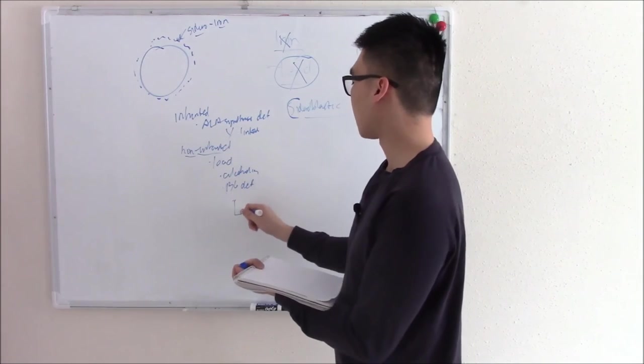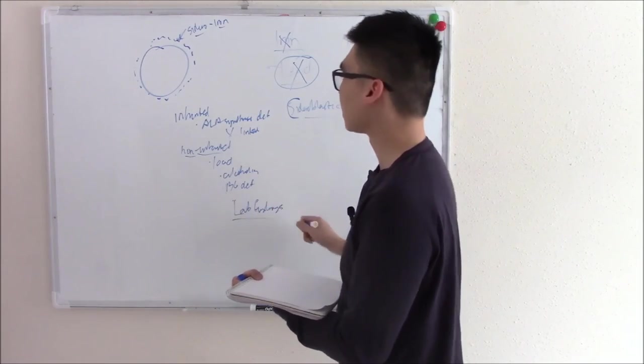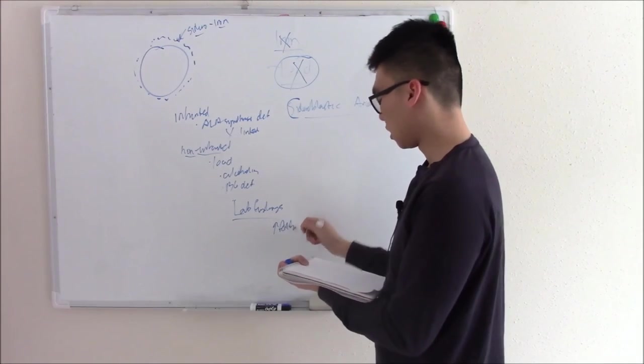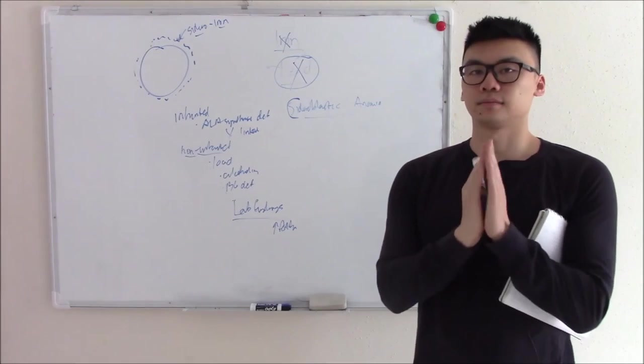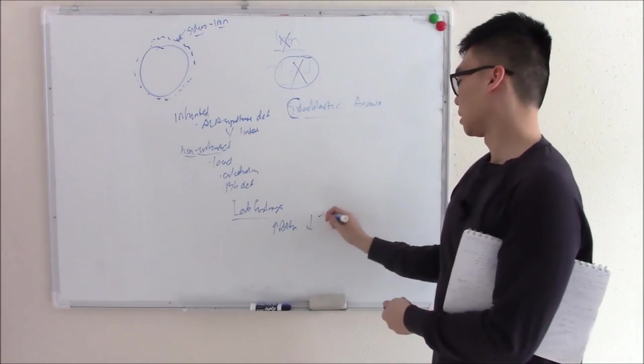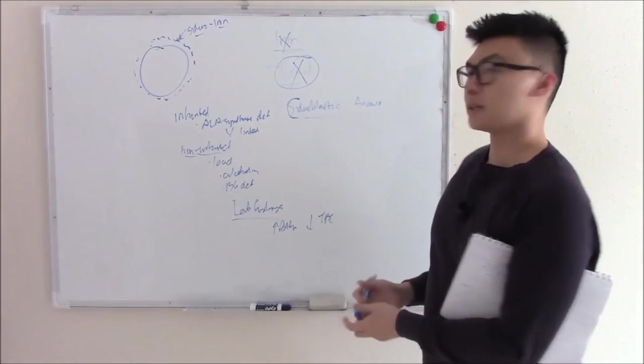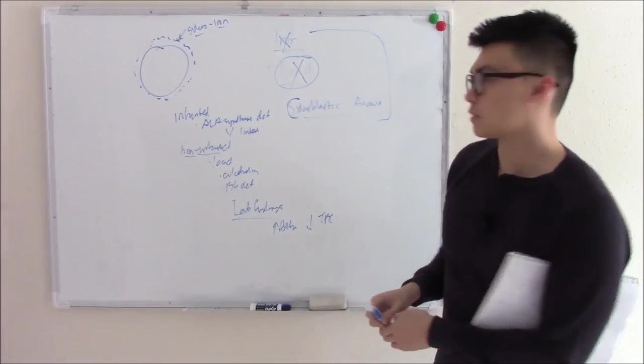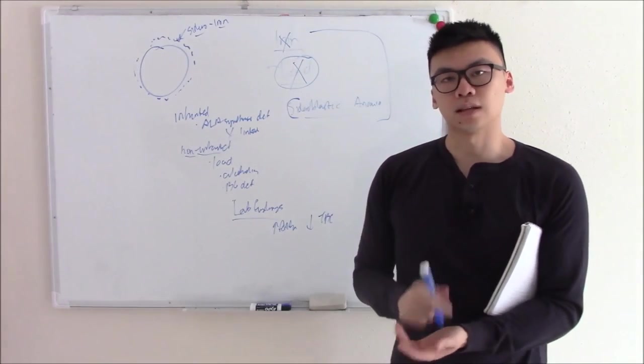And what are the lab findings? They're going to be based on basically iron overload. So you're going to have increased ferritin. You have increased ferritin, what happens to your TIBC? It'll decrease. Decrease TIBC. That's some of your microcytic anemias. Just wanted to recap these because we just went over them in our last video. In our next video, we're going to talk about a few that we've missed. Till then, see you next time.